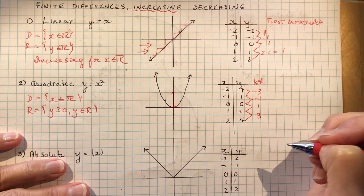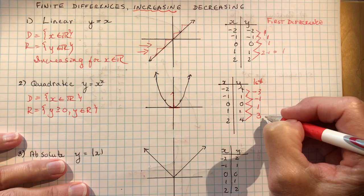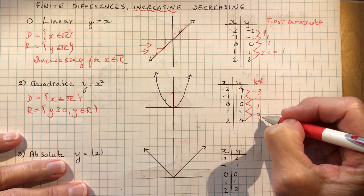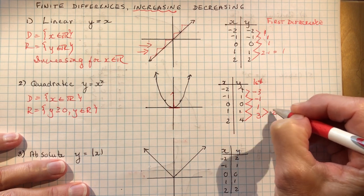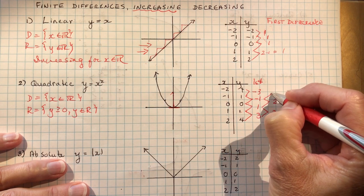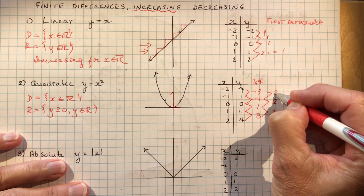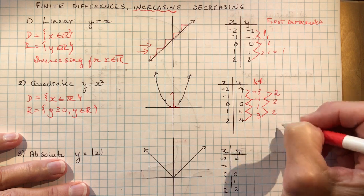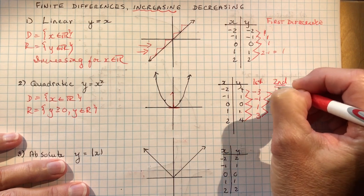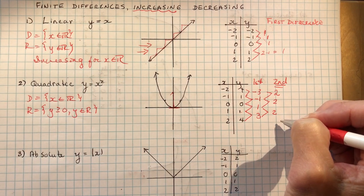Quadratics mean the second differences will be the same. The first differences are 3, 1, -1, -3 — not the same, which is expected for a quadratic. Taking second differences: 3 minus 1 is 2, 1 minus (-1) is 2, -1 minus (-3) is also 2. Now I can stop. The second differences are the same, which confirms it is a quadratic.